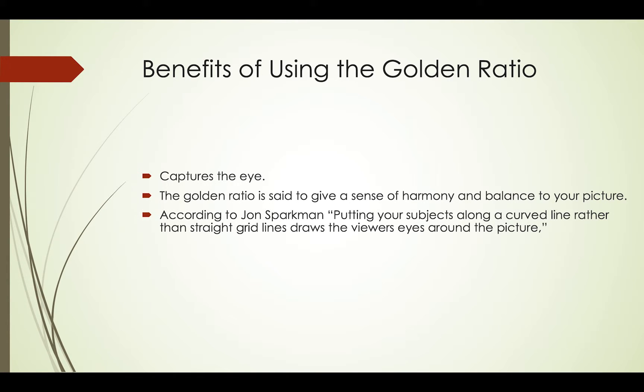The golden ratio is set to give a sense of harmony and balance to your picture. According to John Sparkman, putting your subjects along a curved line rather than a straight line draws the viewer's eyes around the picture so that they can see the entire picture.